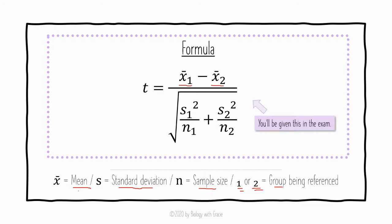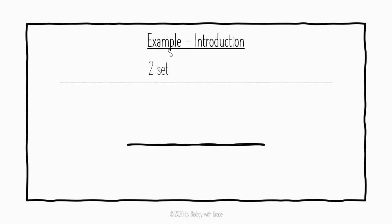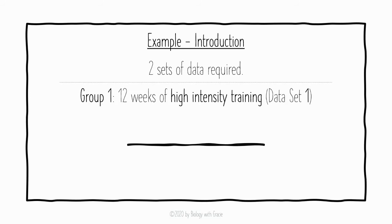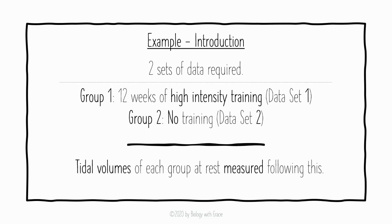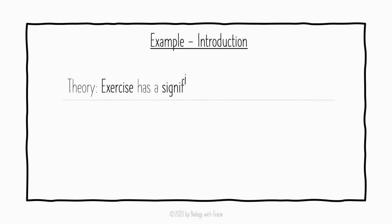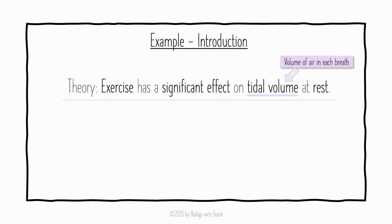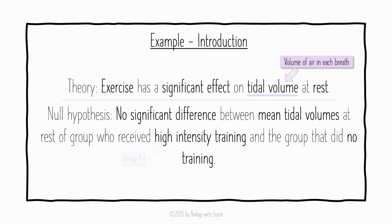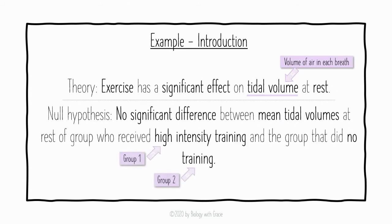The Student's t-test requires two sets of data. Group one are undergoing 12 weeks of high intensity training, and group two will have no training. We're going to measure the tidal volumes of each group following their training, or lack of training. Our theory is that exercise has a significant effect on tidal volume at rest — tidal volume being the volume of air we breathe in with each regular breath at rest.